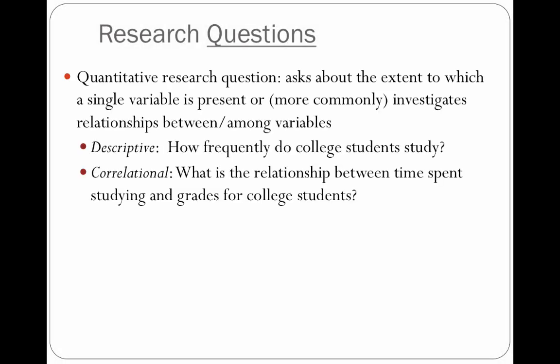Typically, quantitative research questions ask about the extent to which either a single variable is present, or more commonly, about relationships among variables. When a research question is about one variable, it's called descriptive. An example of a descriptive question is: 'How frequently do college students study?' You could answer it with a number — one hour a day, one hour a week, whatever. It's a quantitative research question because the answer is a number. Correlational research questions investigate whether or not there are relationships between two or more variables. An example bivariate quantitative research question is: 'What is the relationship between time spent studying and grades for college students?'